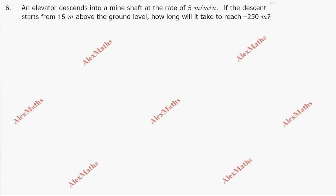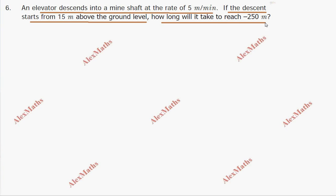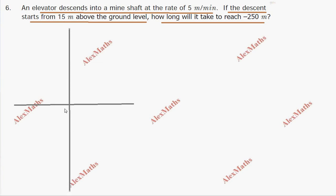Question 6: An elevator descends into a mine shaft at the rate of 5 meters per minute. If the descent starts from 15 meters above the ground level, how long will it take to reach minus 250 meters? So we have to travel from above ground level down below the ground level.